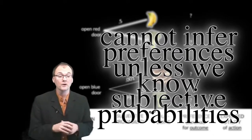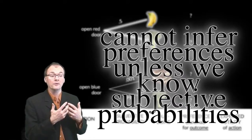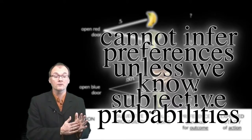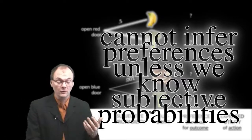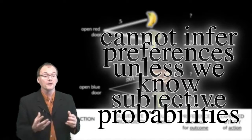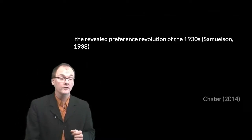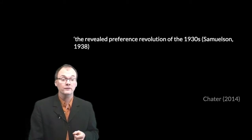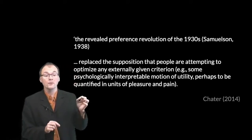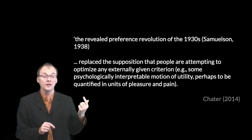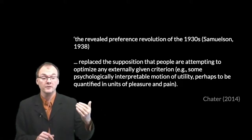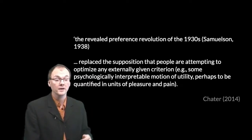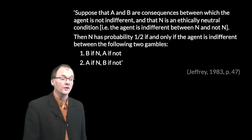Historically in decision theory, for some time people just accepted that they were stuck. They attempted to construct theories which assumed that there was some kind of objective value that everybody was seeking — some kind of pleasure or happiness. They just thought chocolate is objectively better than bananas. In a way that's fair enough, but it gives us a theory which is extremely limited. Nick Chater says correctly that the revealed preference revolution of the 1930s replaced the supposition that people are attempting to optimize an externally given criterion — whether chocolate is just objectively better than bananas, or some psychologically-based criterion to do with utility units of pleasure and pain. We got away with that supposition. That's the magic that you are about to see.